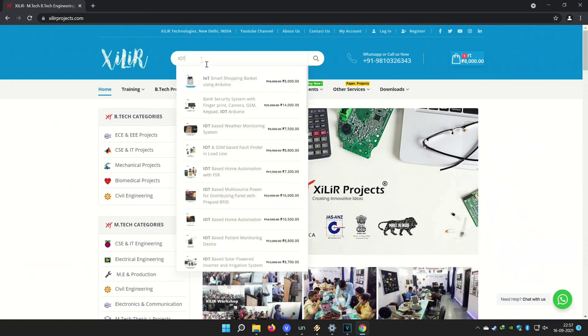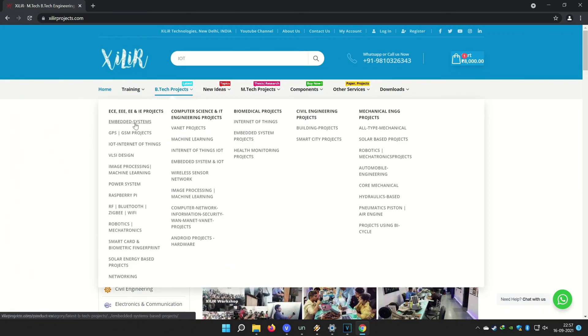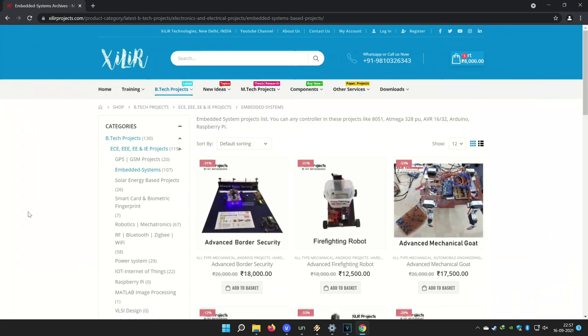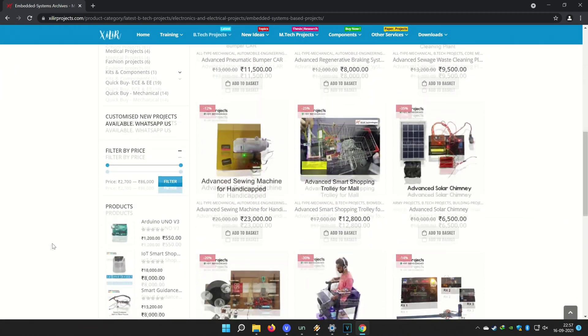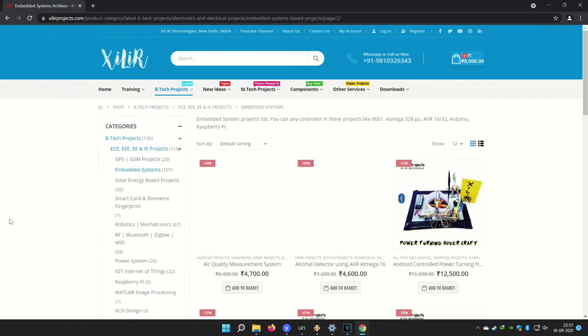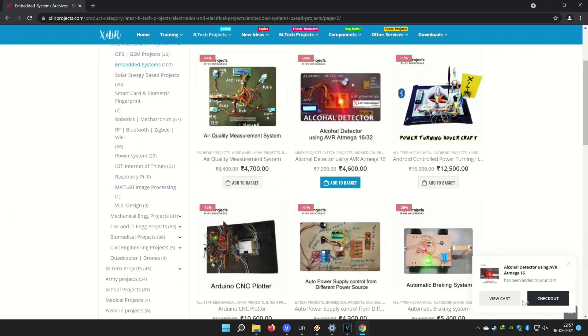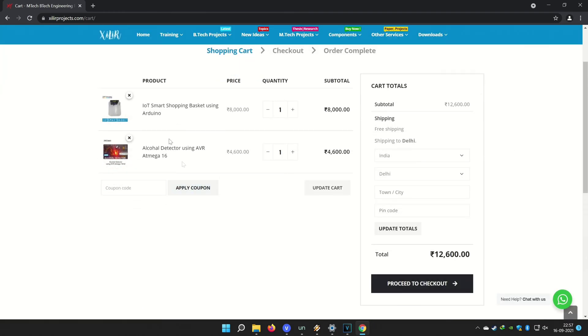You can also come to our lab and make projects on your own under our guidance in a one day workshop. You can buy projects, components, etc. from online or offline. Both options are available. If you want to make something unique, new, and creative, just WhatsApp us on the number given in the description box.